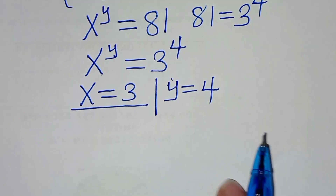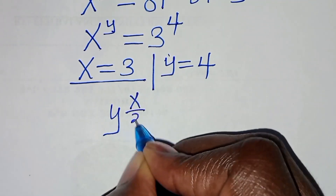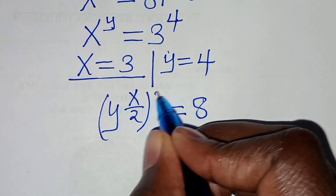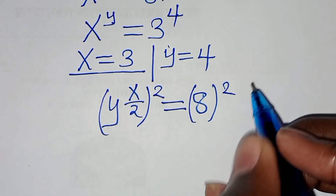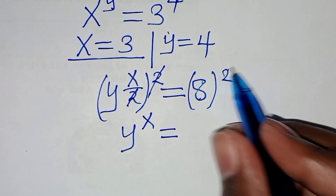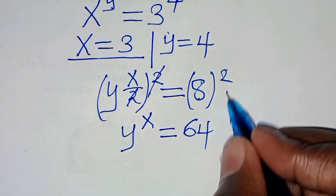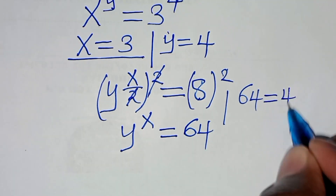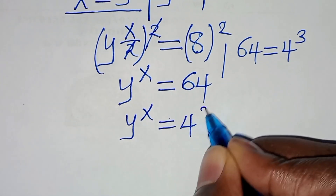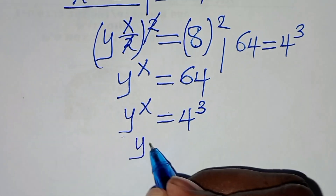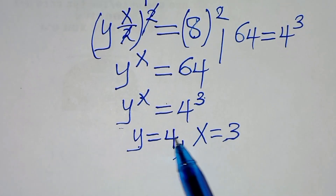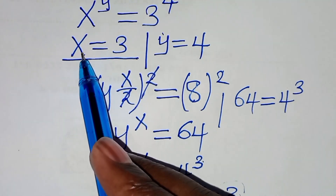Now let's check with n. We have y to the power of x over 2 equals n, which is 8. Squaring both sides, y to the power of x equals 8 squared, which is 64. Expressing 64 as 4 to the power of 3, we have y to the power of x equals 4 to the power of 3, so y = 4 and x = 3. This confirms our earlier result.